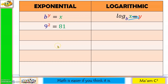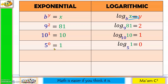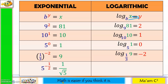For each example, the process is the same: write the log, copy the base, the answer in exponential becomes the number in logarithmic form, and the exponent becomes the answer. This pattern is applied consistently across multiple examples — including cases with fractional bases and negative exponents — until all six examples are completed.